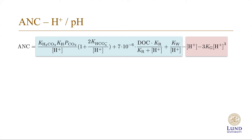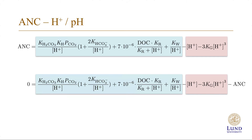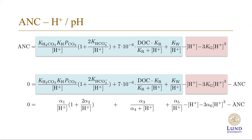However, if we want to solve for the H⁺ concentration, we need to approach it differently — solving zero equals the difference between the anions to the weak acid minus the cations to the weak bases minus the ANC. This can be done numerically in different ways. In principle, it's a polynomial equation with a series of constants, the H⁺ concentration, and the ANC, that should equal zero.